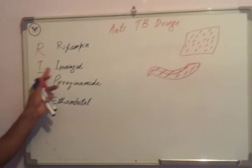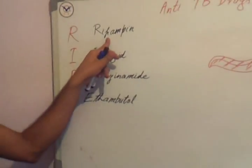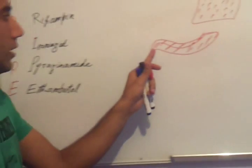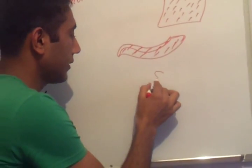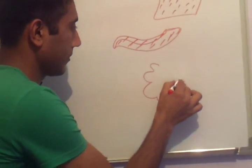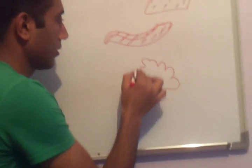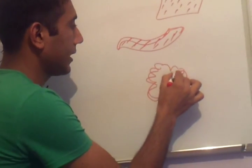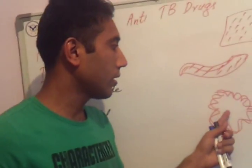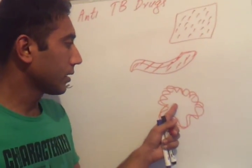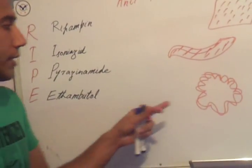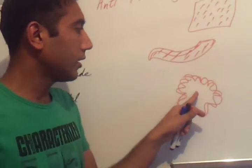The mechanism of action of these drugs — first, rifampin. Rifampin acts inside the nucleic acid of bacteria. The nucleic acid of bacteria is a circular DNA strand. Normally, human nucleic acid is linear and consists of chromosomes, but bacterial DNA material is circular.